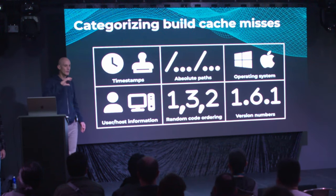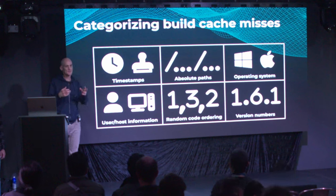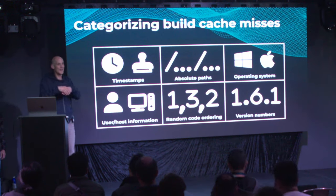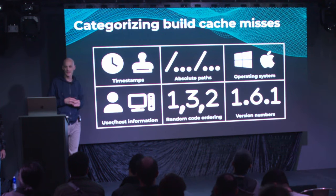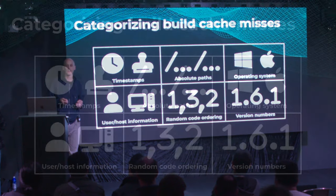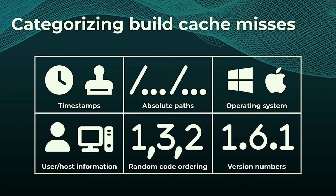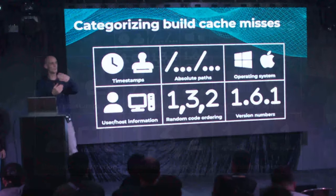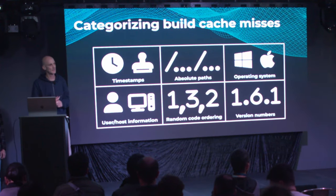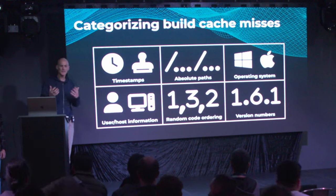When you turn on build caching, you typically experience some hits, but you don't get a hit on every task where you'd expect one. There are multiple reasons, but two main ones: first, you might want to consume an artifact from the cache but it's not there anymore — it got evicted. That's one cause, though typically not the main one.